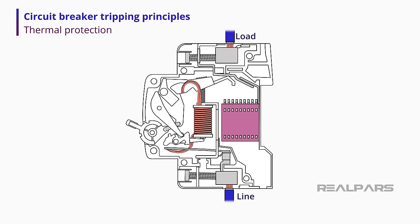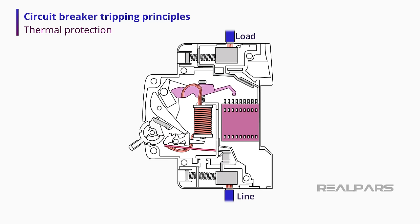Looking at thermal protection, the bimetallic strip heats up with the current. If the circuit's current rises over a certain level, the strip will bend, moving the switch linkage, and consequently the moving contact, breaking its connection to the stationary contact, causing the circuit to break.